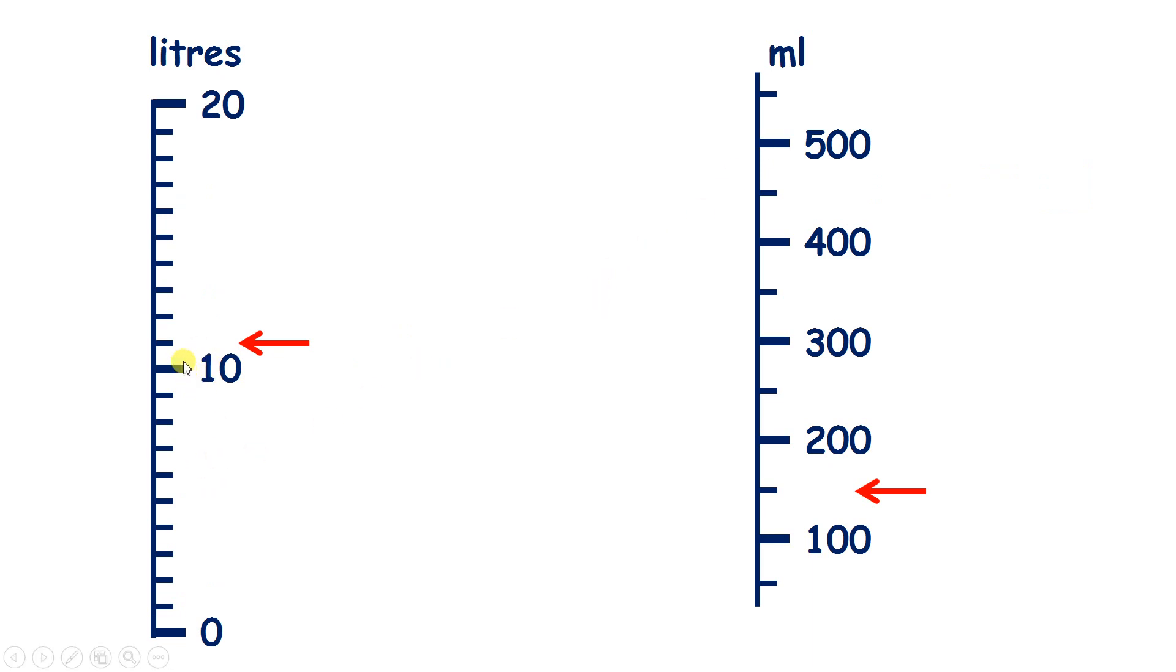Now this scale here is interesting, because we have lots of little markings, but only the numbers 0, 10, and 20 are labelled. Well, if there are 10 markings before you get to 10, then each little marking must represent 1 litre. So our arrow is pointing to the marking above 10, so we must have 11 litres.